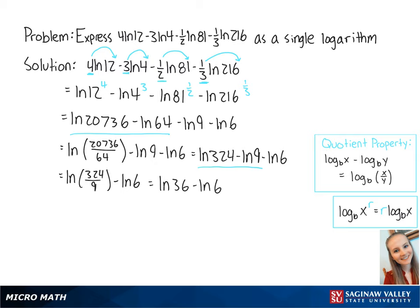We're going to use the quotient property one more time to combine the remaining two logs. This equals the ln of 36 over 6, which is equal to the ln of 6. This is the final answer.